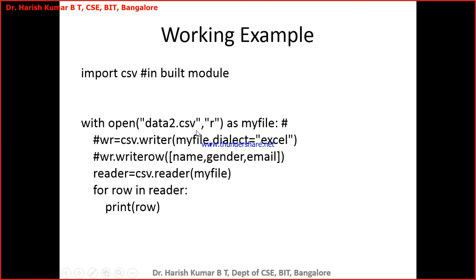I have a working example here. Import the CSV module and then open the file data2.csv in read mode, and the handler is stored in my file variable. I am reading from the CSV file by passing it as an argument to the reader method of the CSV module, and then print row. So for every row it will read and then go for printing.